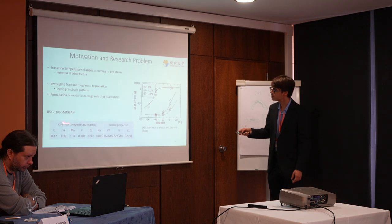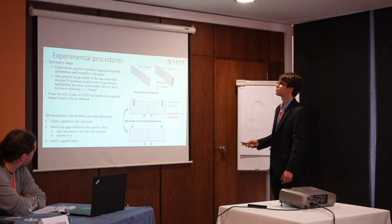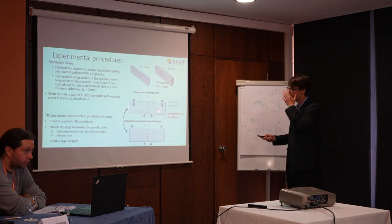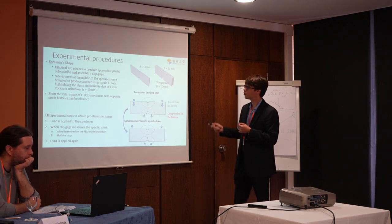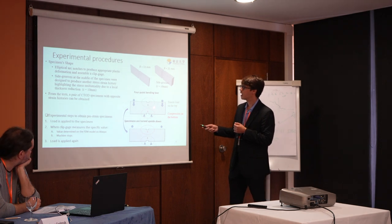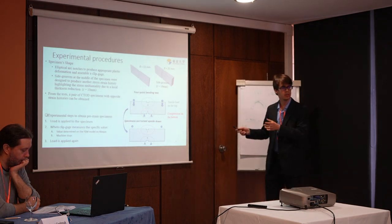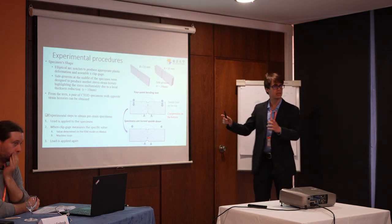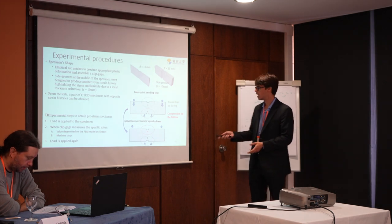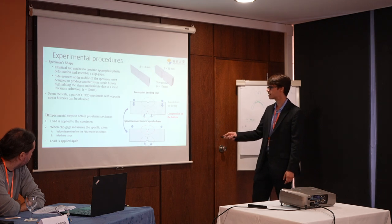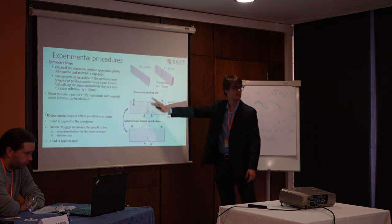Here is the chemical composition of the steel we tested — Japanese standard SM-498. The experimental procedures were based on a four-point bending test. Two arc nodes were designed so that when we apply the load, we can have tensile load on the top and compression on the bottom. We apply the load and stop the machine when a specific value of deformation is attained, then turn the specimen upside down and conduct the test again.